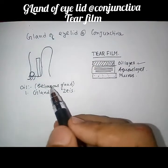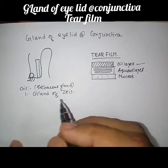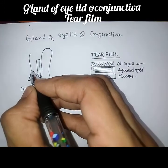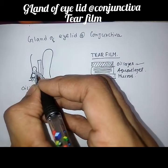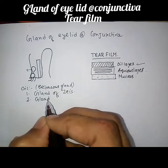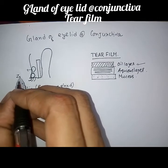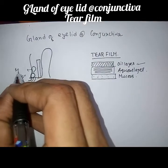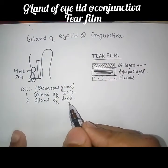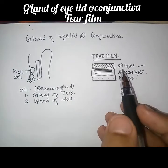The gland of Zeis is clinically important. The second gland opens directly into the duct of the gland of Zeis and is known as the gland of Moll. Both the gland of Zeis and the gland of Moll are modified sebaceous glands secreting the oily outer layer of the tear film.